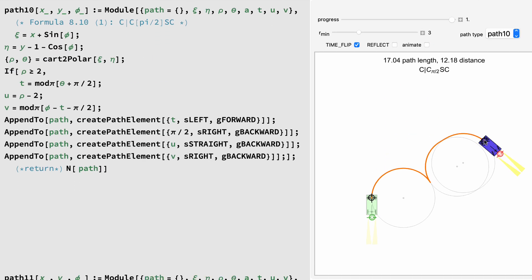Path 10 is a curve, gear shift, curve of 90 degrees, straight, curve. Only two trig operations and a Cartesian to polar conversion.